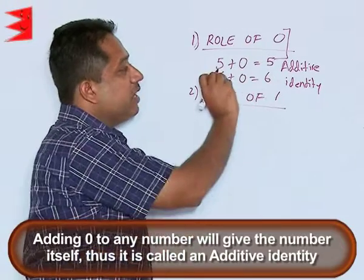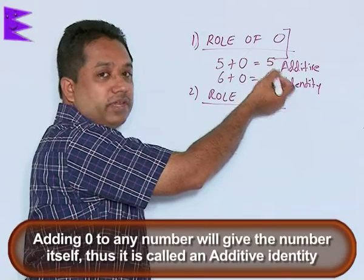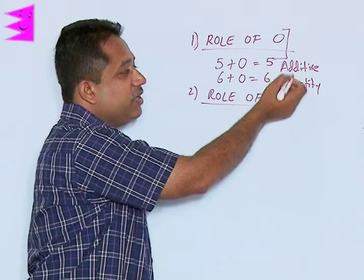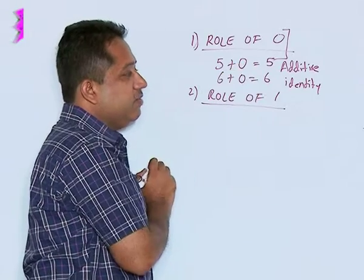However, if you multiply, let us say 5 into 0, we are not going to get the number, we are going to get 0. It is not true for multiplication, it is only true for addition. So, 0 is an additive identity.